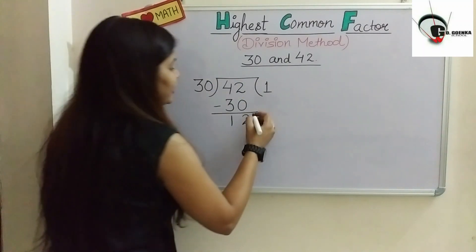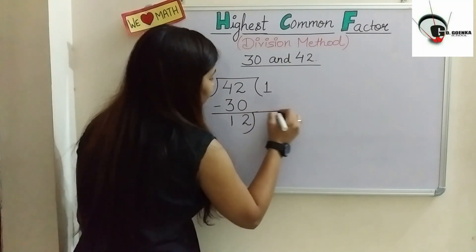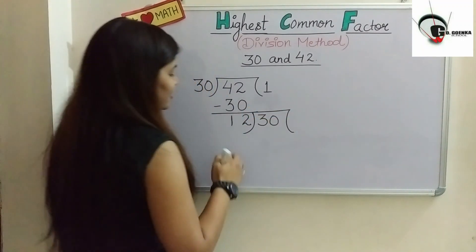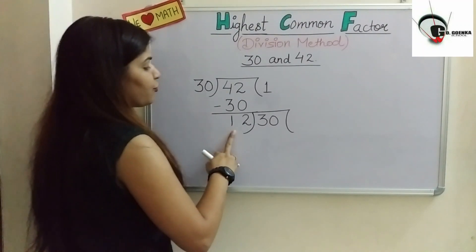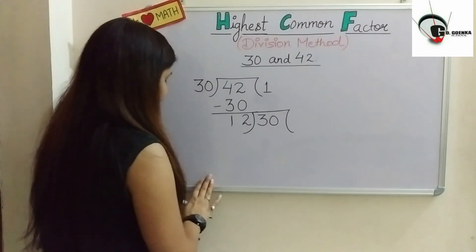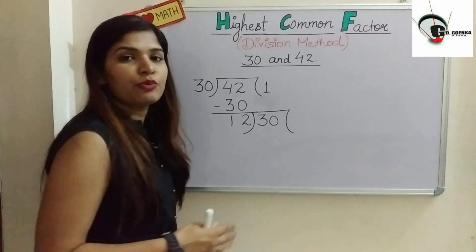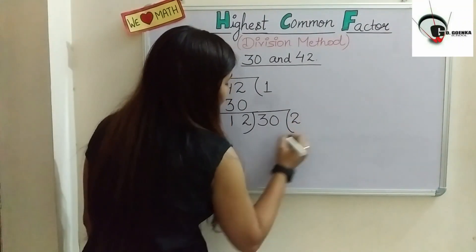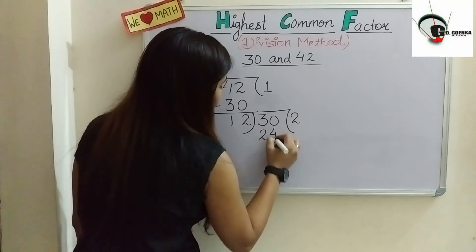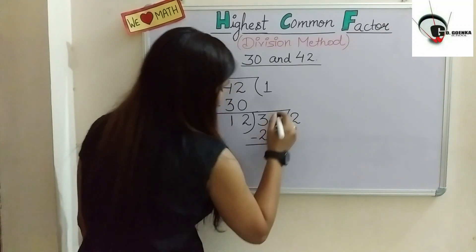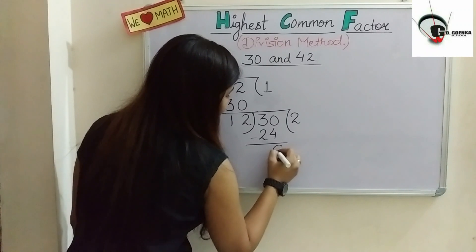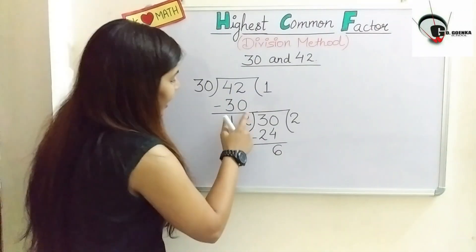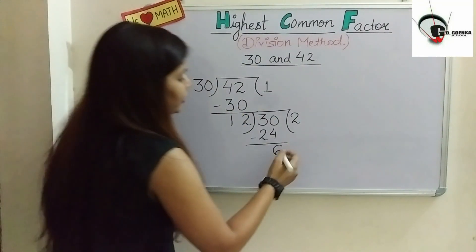Now the next step: the remainder becomes the next divisor, and the previous divisor becomes the next dividend. So 30 moves up as the new dividend and 12 is the new divisor. We check 30 in the table of 12: 12 ones are 12, 12 twos are 24, 12 threes are 36. So 12 twos, 24, and we subtract to get a remainder of 6.